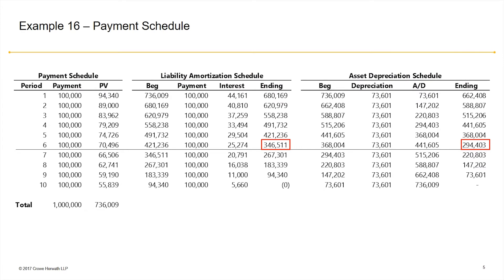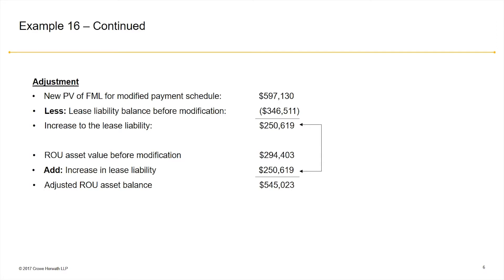Before we get into the calculation, let's review the balances before the modification. We see that the lease is changed at the beginning of year 7. So in year 6 we have an ending balance of $346,511 for the lease liability and our asset depreciation schedule ending balance is $294,403. These are the balances that we are going to be using to calculate the adjustment on the lease liability and the right-of-use asset.